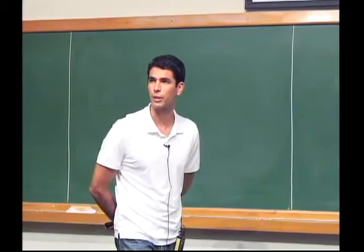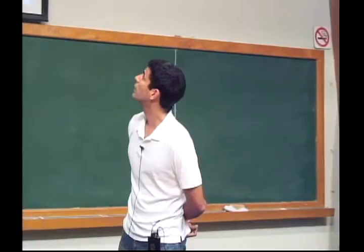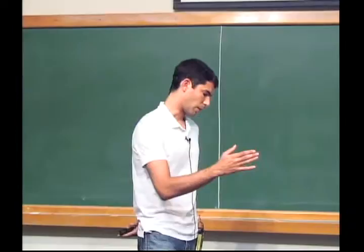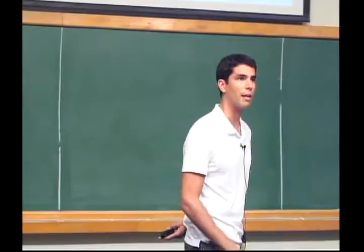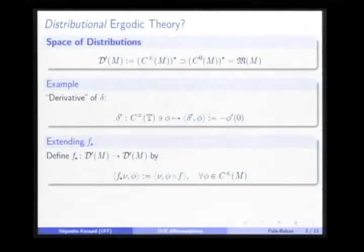A very simple example of a distribution which is not a measure is a derivative of the delta — this is the distribution given by evaluating the derivative of any test function at zero. Since we are considering a smooth dynamical system, the operator f-star originally defined on the space of measures can be naturally extended to the space of distributions, and essentially the formula is the same, replacing the integral symbol by the classical brackets for evaluating distributions.